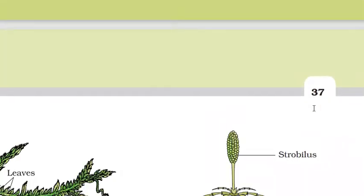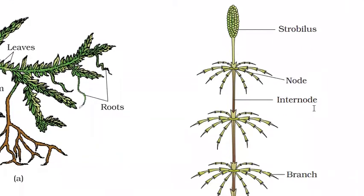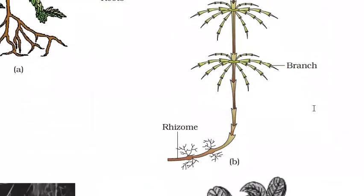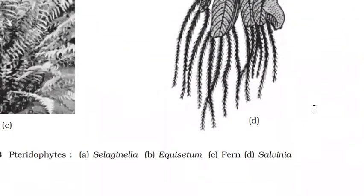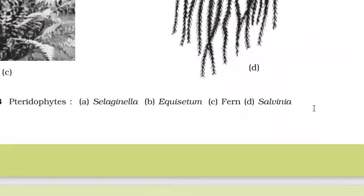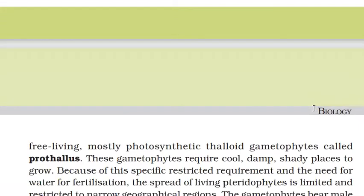These are diagrams of different pteridophytes. The gametophyte is free-living, mostly photosynthetic, and thalloid. Spores germinate to form the gametophyte, which is called the prothallus.